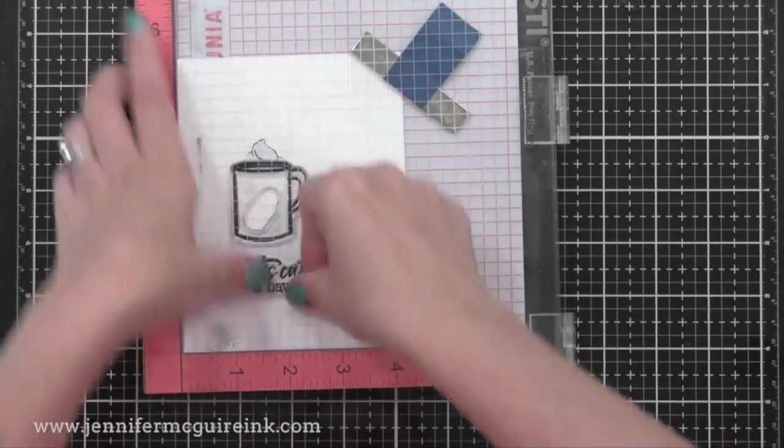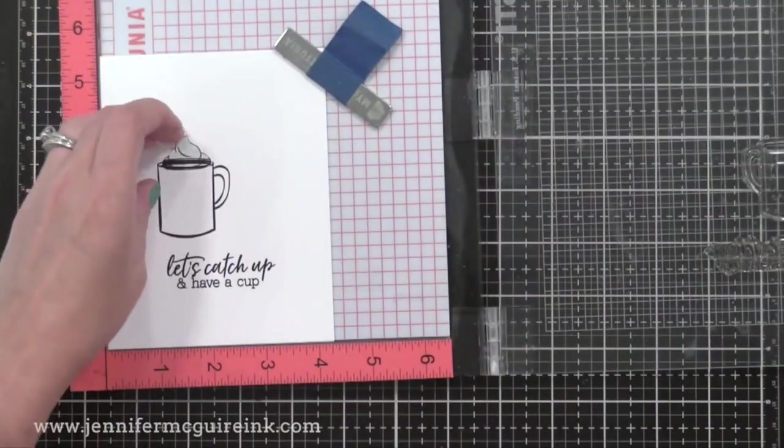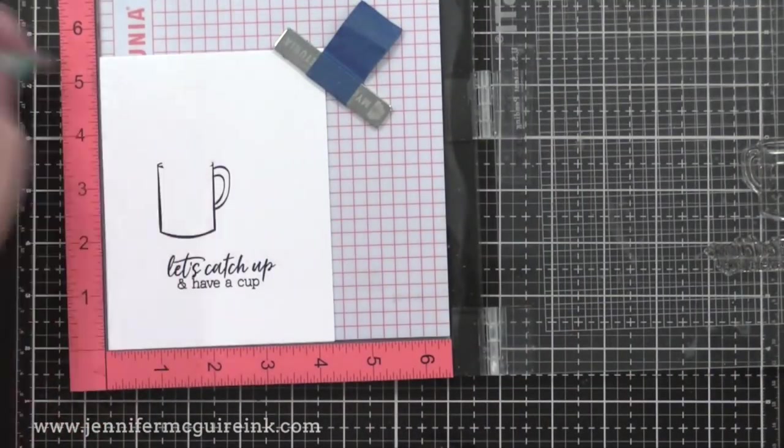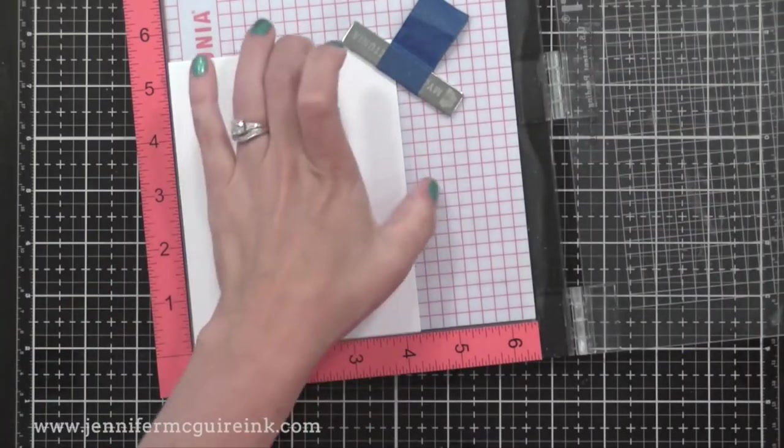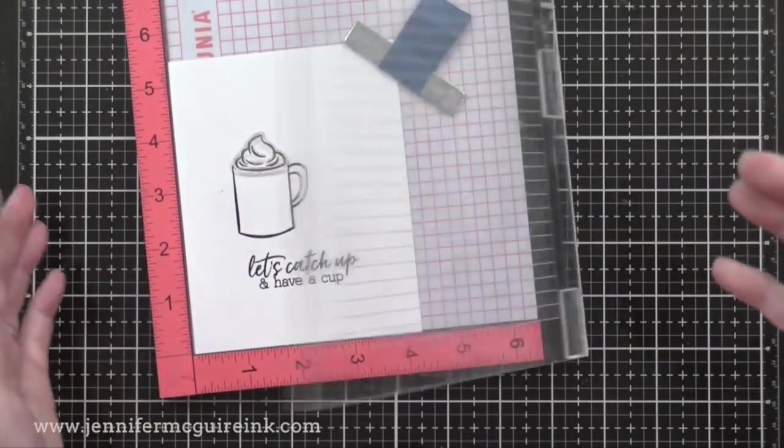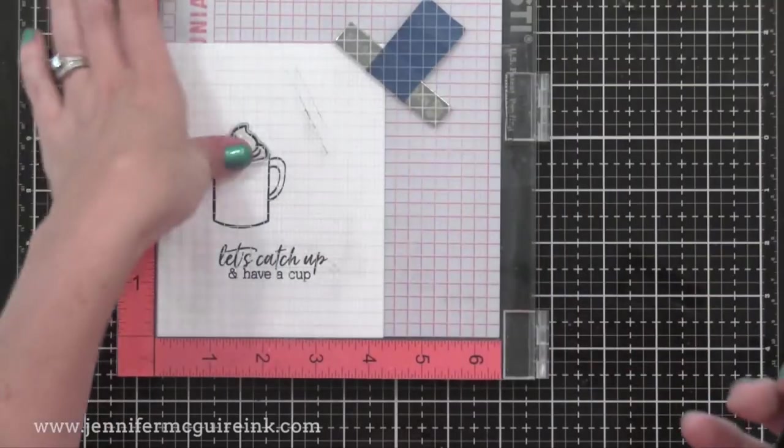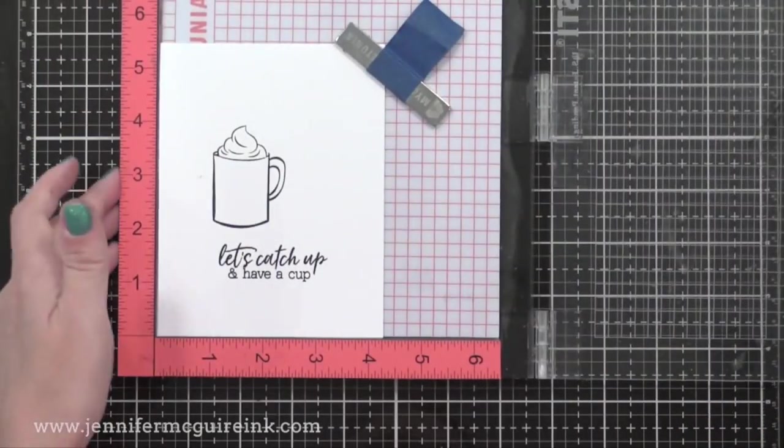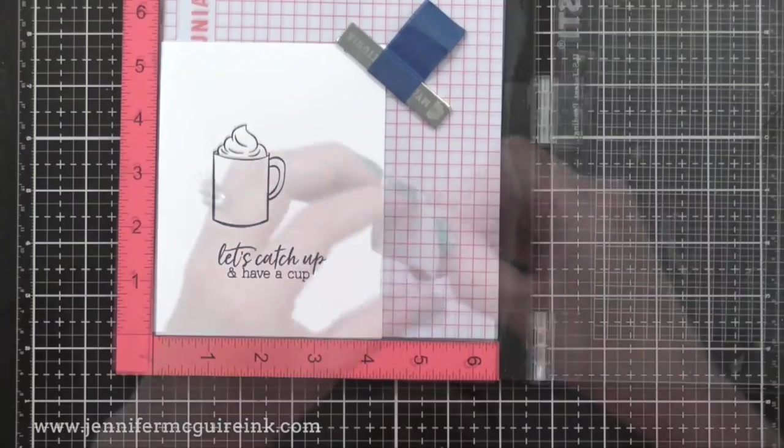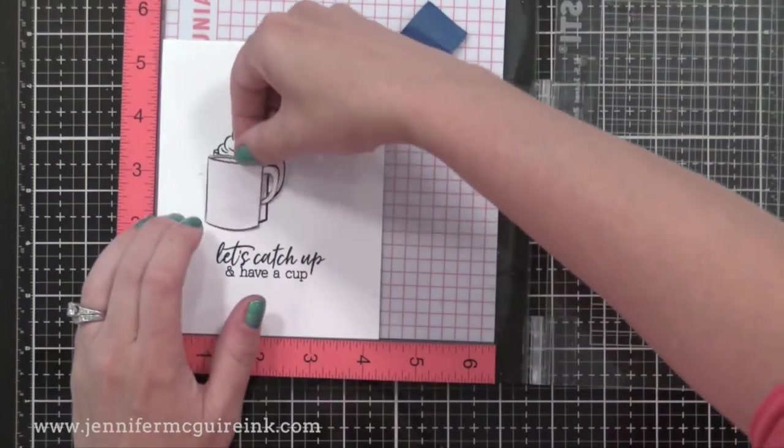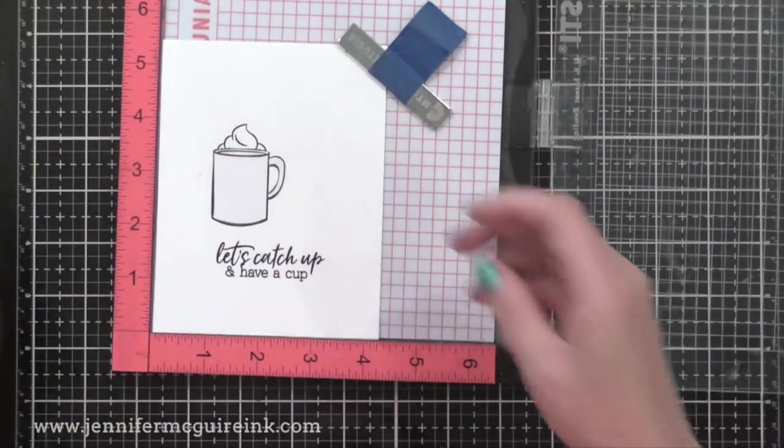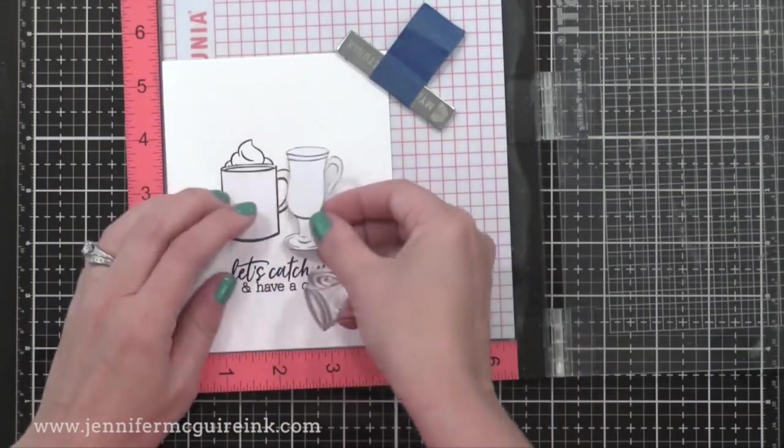I'll now close the Misti doors, remove the cup mask. I can keep the whipped cream there. And then stamp my images. Now I can say there are many ways to do masking. Different orders for using the masks and the stamps. Just do what works best for you. Start with a simple mask card to get the hang of things. Then you can step it up a little bit.